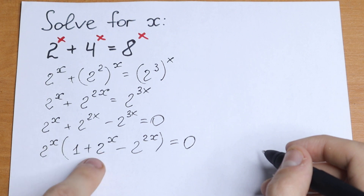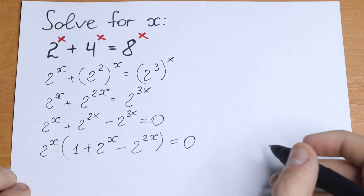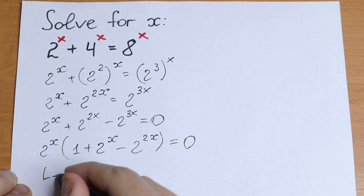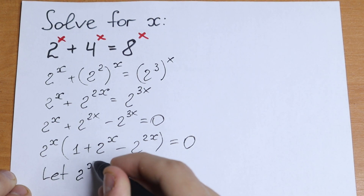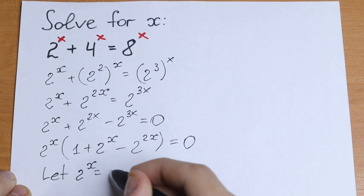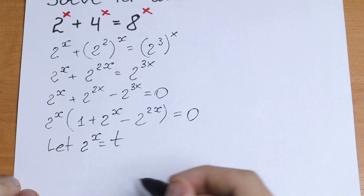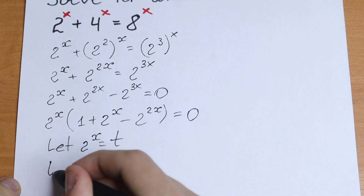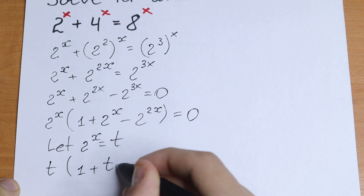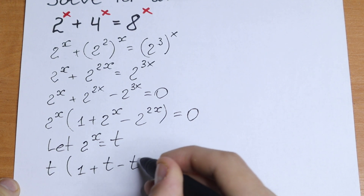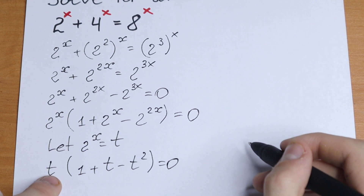Take a look. We have 2 to the power x times the expression 1 plus 2 to the power x minus 2 to the power 2x. We can use a substitution — let 2 to the power x equal to t. We will have the interesting equation: t times (1 plus t minus t squared) equal to 0.